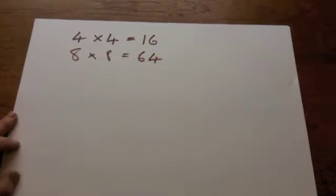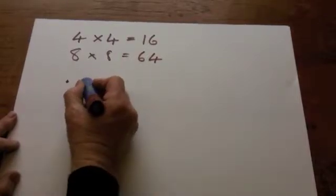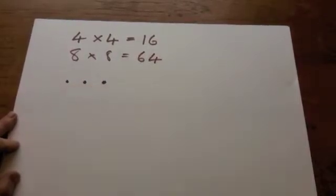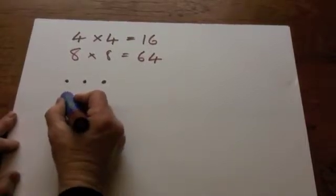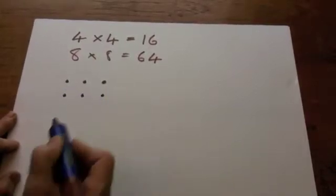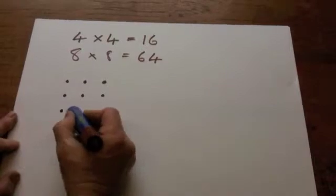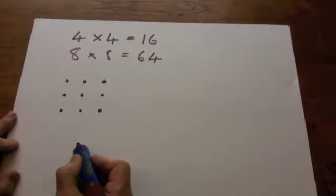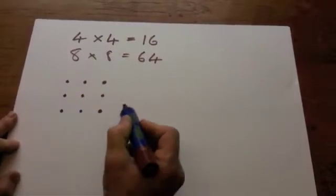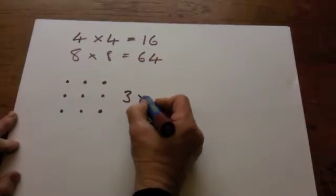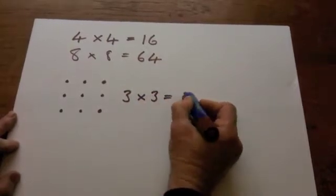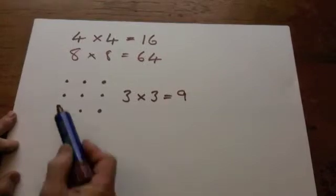Look at this one. One set of three dots, two sets of three, three sets of three. Look, we've got a square. Three sets of three make 9. 9 is a square number.